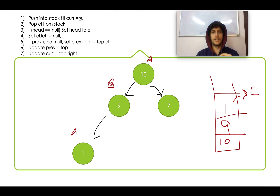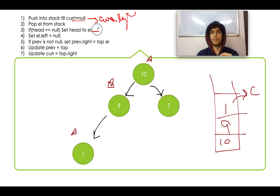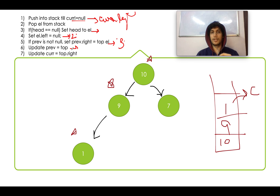Here is the algorithm written in standard iterative inorder traversal style. While current is not null, push current onto the stack and move to current.left. Then pop the element from the stack. If head is null, set head to the popped element — this happens only once. Set element.left to null (rule 2). If previous is not null, set previous.right to the popped element (rule 3). Update previous to the popped element, then update current to top.right.